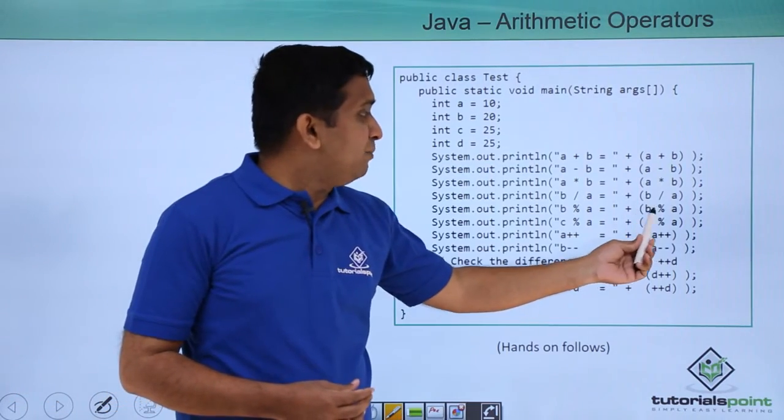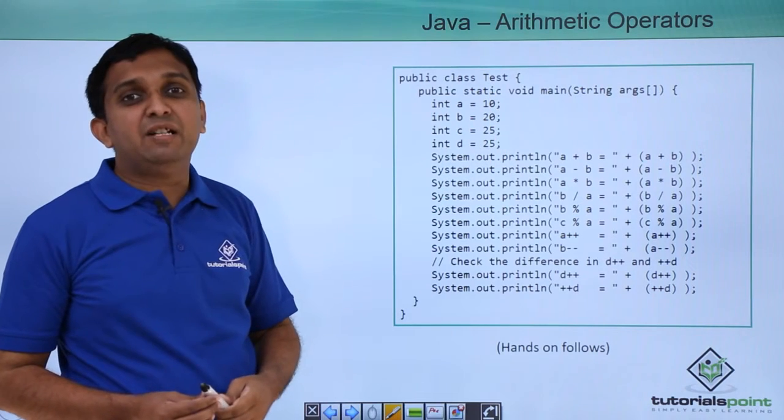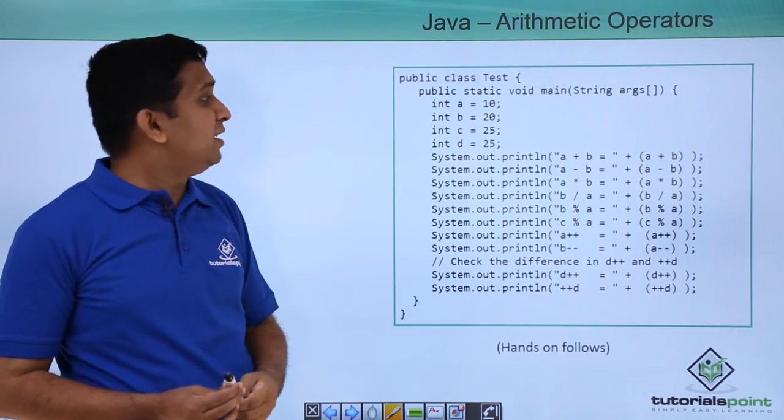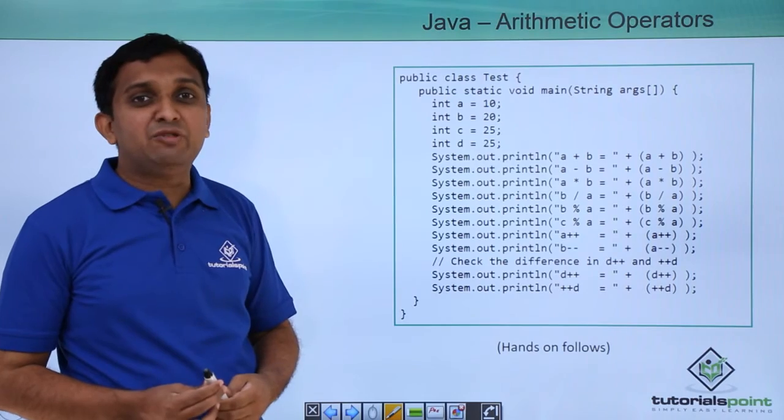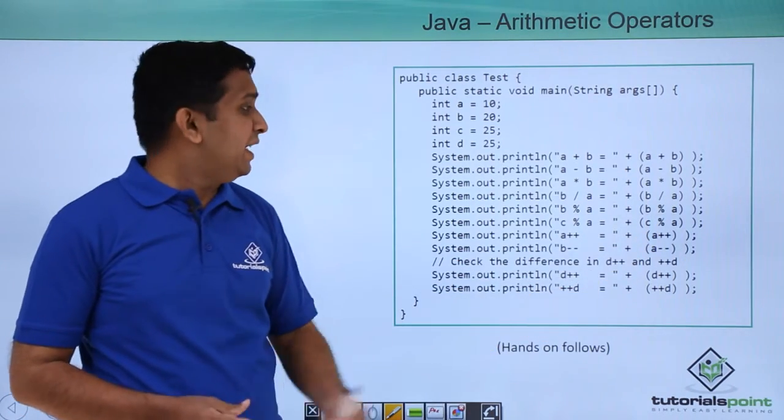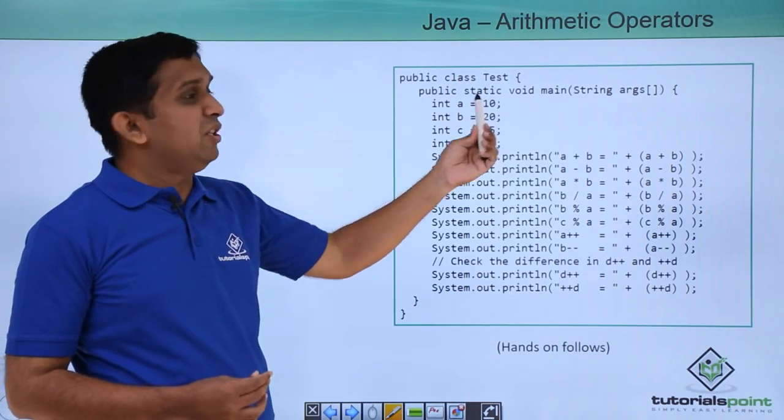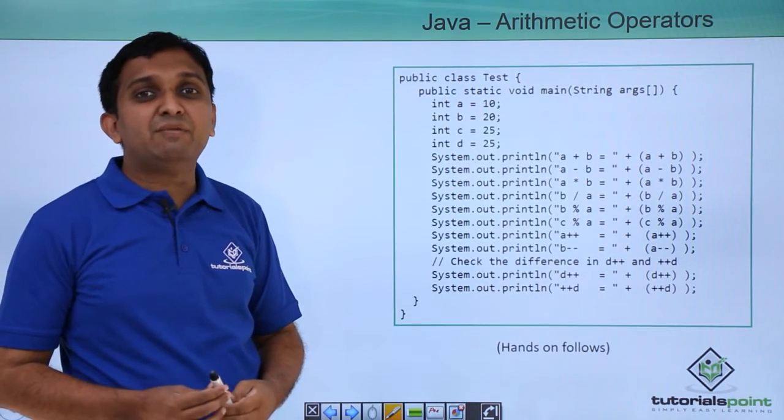For b mod a, what will be the output? b is 20, a is 10. So b mod a will give me the remainder of 20 divided by 10, which will be 0. c mod a—c value is 25, a value is 10—so the remainder will be 5.